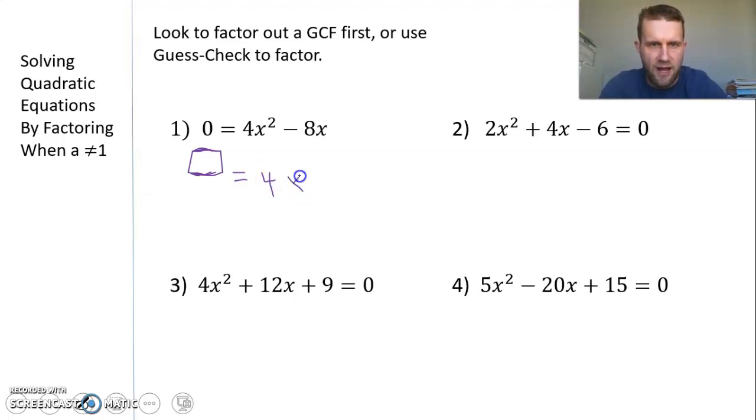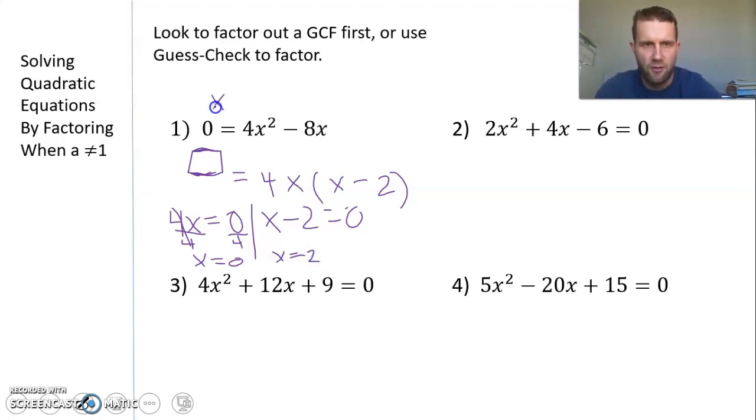We can factor this down. I can take out a 4x, then in parentheses, if I divide 4x² by 4x, I get x. Then minus 8x divided by 4x is just 2. So 0 = 4x(x - 2). Now I'm ready to solve using the zero product property: 4x = 0 and x - 2 = 0. When I divide 0 by 4, it's still 0, so x = 0. Adding 2 to both sides of the other equation gives x = 2.